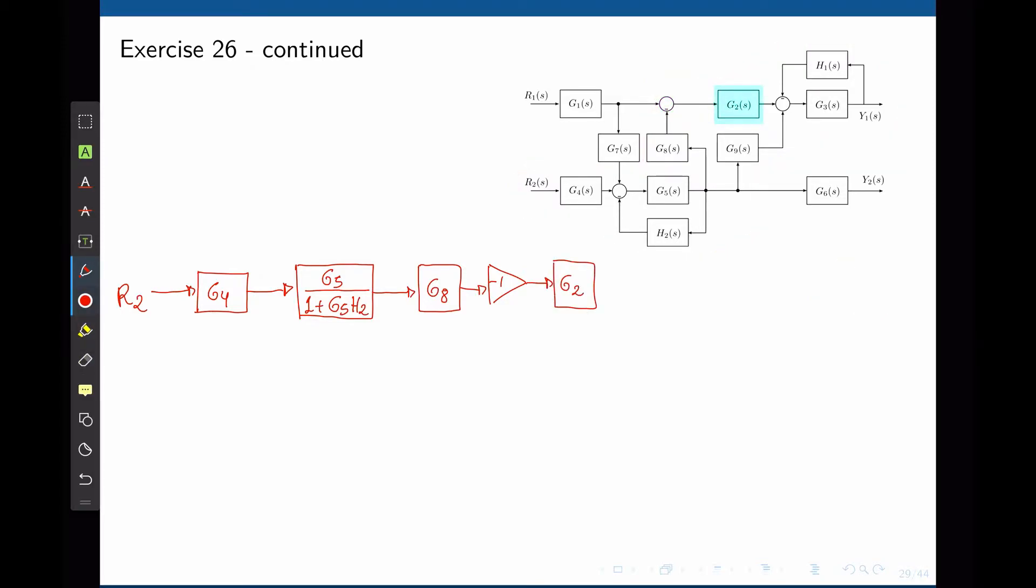The output of G2 now goes to that sum with three inputs. We can split that into two sums, each having two inputs. So G2 can feed a sum that is the output of G9 with a positive sign, and we can split that into two sums again, the sum of the feedback loop G3 and H1.